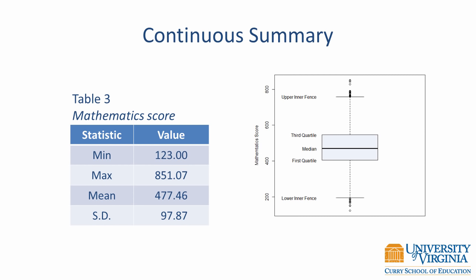Choose the plot that tells the best story. If you have a unimodal distribution with outliers, use a box plot. If you have a bimodal distribution, use a histogram.